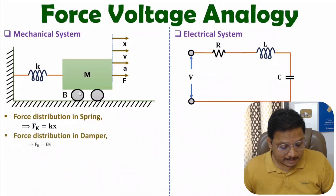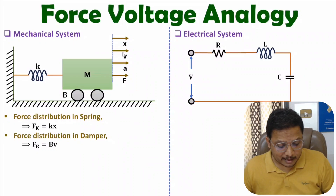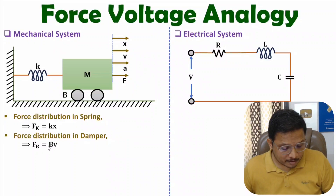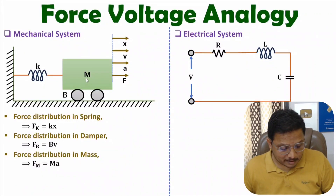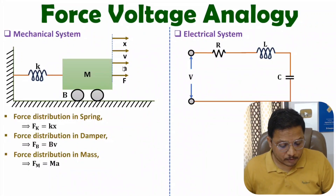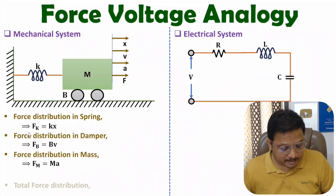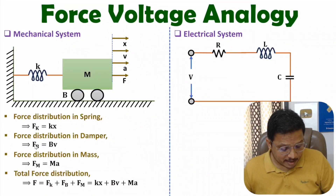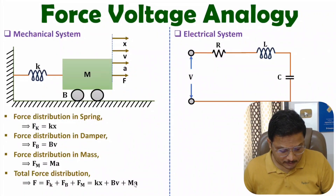The second element is the damper. Because of force f we have velocity v, and as per damping constant b, the force distribution inside the damper is b times v. For mass m, the force distribution is mass times acceleration a. So total force f equals the algebraic sum: k·x plus b·v plus m·a. That is how total force distribution happens in this mechanical system.